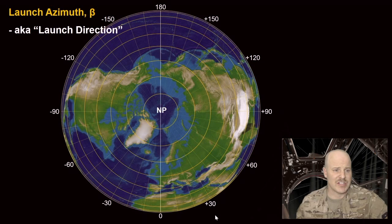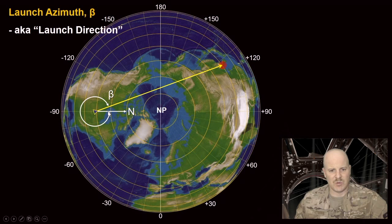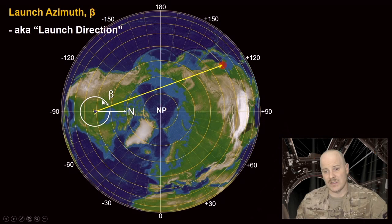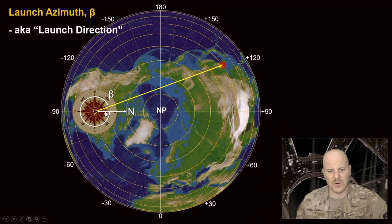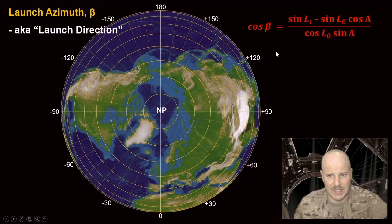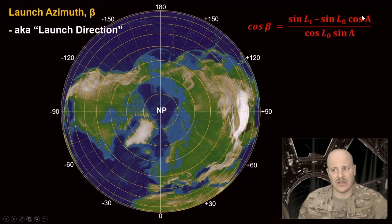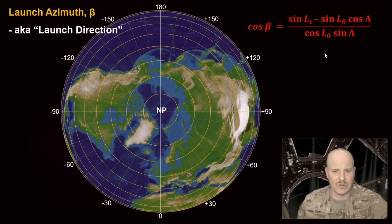Our next geometric term is launch azimuth, beta — defined conventionally from north in the clockwise direction. For example, launching from the United States toward the South China Sea would use a beta related to that angle. Remember that north points toward the North Pole, not simply upward. The equation on your sheet says that cosine of beta equals a relationship between the latitude of the target, the latitude of the origin, and the range angle we just calculated.